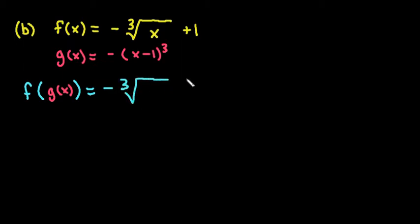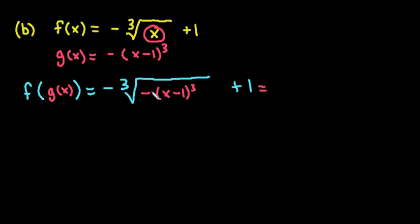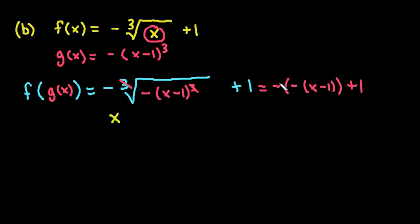The negative, the cube root function, and the plus 1 all stay in the f equation. I simply take my g of x equation — negative x minus 1 cubed — and replace it in for x. Simplifying: I can take the cube root of a negative because a negative times a negative times a negative gives a negative. So I have a negative outside, and the cube roots cancel, leaving negative negative x minus 1, plus 1. The negatives cancel each other out, leaving x minus 1 plus 1, which equals x. So f of g of x equals x.